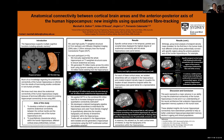Tract tracing data from rodent and non-human primate studies has shown that specific cortical areas connect with different regions along the anterior-posterior axis of the hippocampus, but we know very little about these patterns in the human brain. So the aim of this study was to address this gap by adapting a diffusion-weighted imaging tractography pipeline.